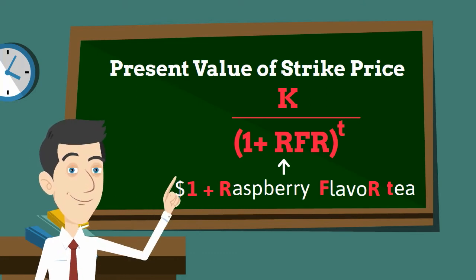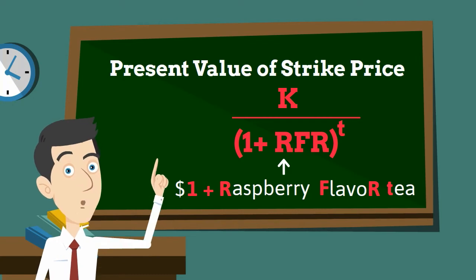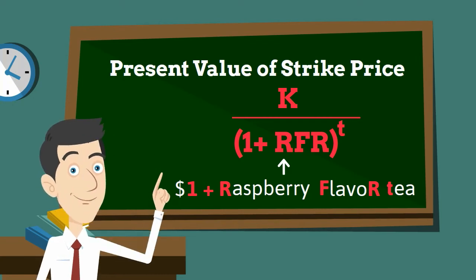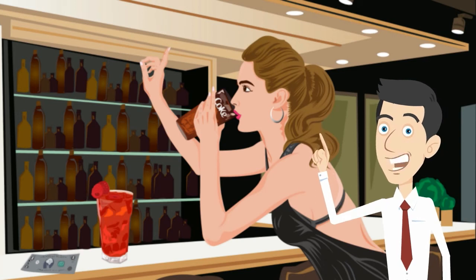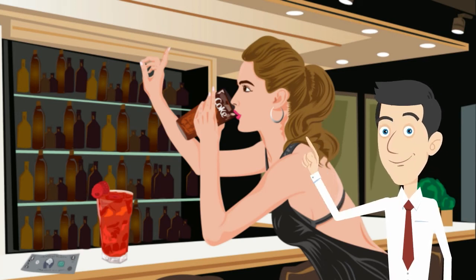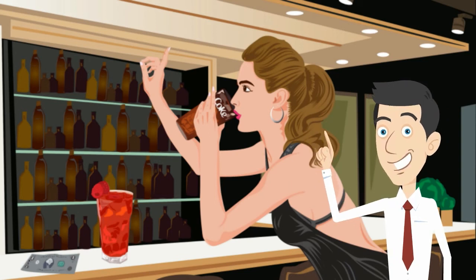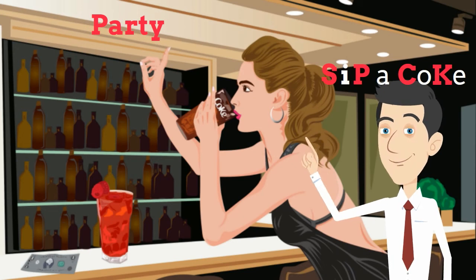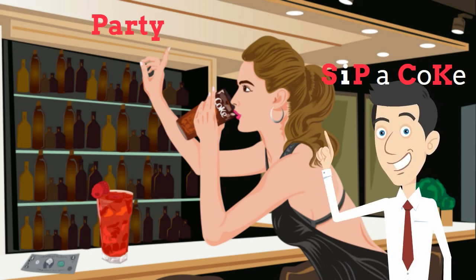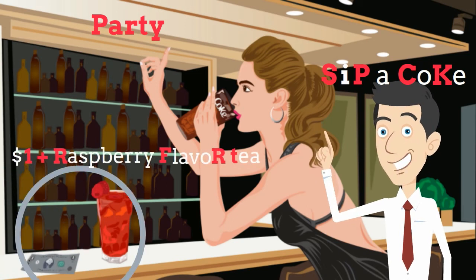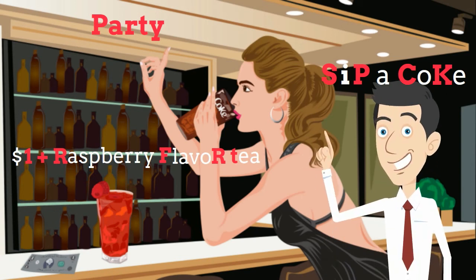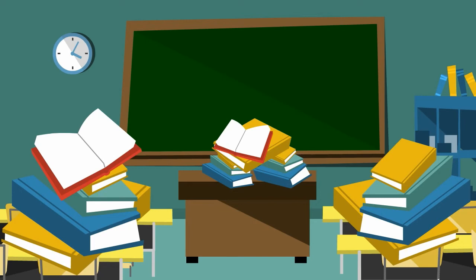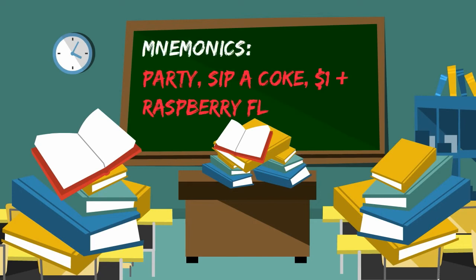You can apply this to any situation involving a present value calculation — just add one dollar and you get a raspberry flavored tea. We have created a picture to help you visualize this mnemonic shortcut. In a party, a woman sips a Coke, and she can get a raspberry flavored tea by adding one dollar. So now you can easily memorize the put-call parity formula, and in the exam, you can simply shuffle the algebra to answer the question.